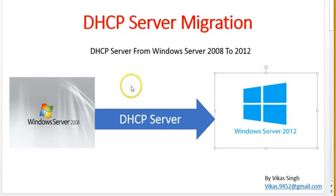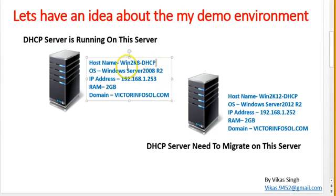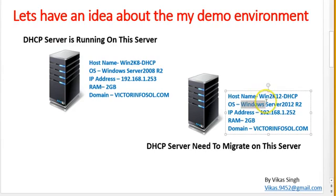Hello friends, welcome to my channel. Today I am going to show you how to migrate a DHCP server. In this demo, I am going to migrate DHCP server from Windows Server 2008 to Windows Server 2012. Currently I am running DHCP server on Windows Server 2008 R2 with hostname win2k8-dhcp and IP address 192.168.1.253. The new DHCP server is running Windows Server 2012 R2 with hostname win2k12-dhcp and IP address 192.168.1.252.